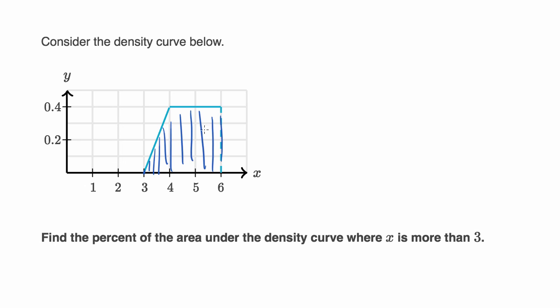This is actually somewhat straightforward. Because if we're saying the area where x is more than three, that's the entire area under the density curve. And the entire area under any density curve needs to be equal to one. The whole density curve is where x is more than three. So 100%. We don't even have to go through the trouble of trying to directly calculate the area.